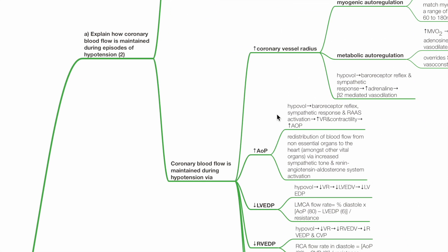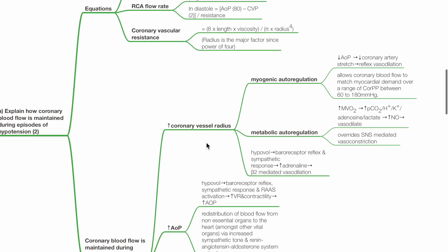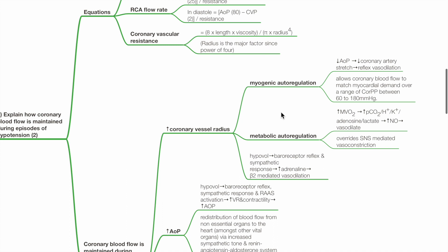Coronary blood flow is maintained during hypotension via increased coronary vessel radius by: myogenic autoregulation, metabolic autoregulation, and beta-2-mediated vessel dilation.